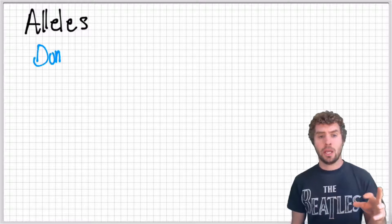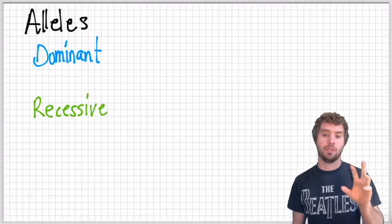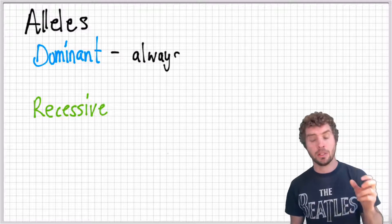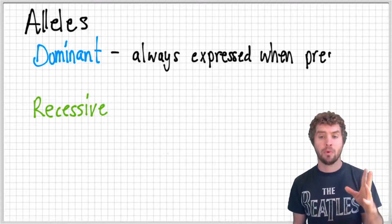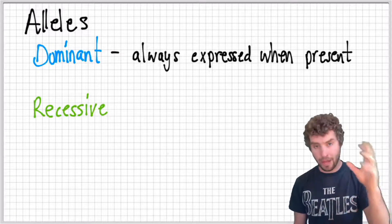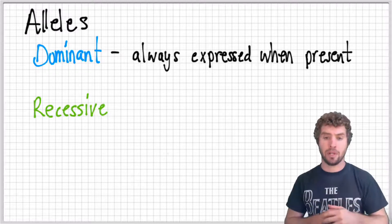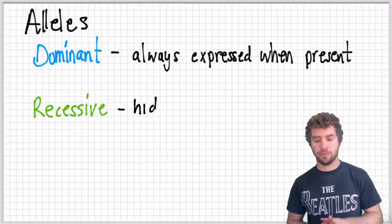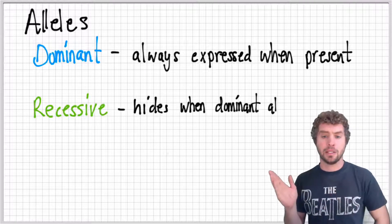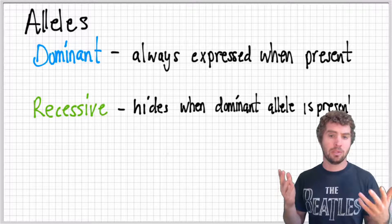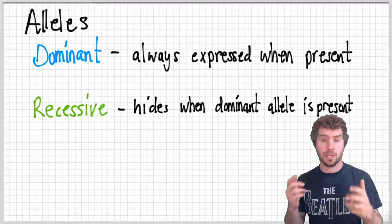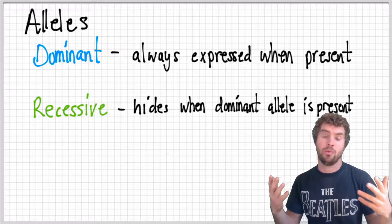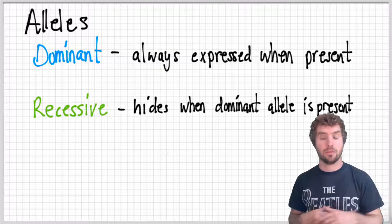Now, alleles generally come in two forms: dominant and recessive. A dominant allele will always express whenever it's present — that will determine the phenotype. The recessive gene, on the other hand, hides. You don't see the recessive gene if a dominant gene is also present. So sometimes you can be a carrier of a recessive gene even though you don't show the trait that the recessive gene creates.